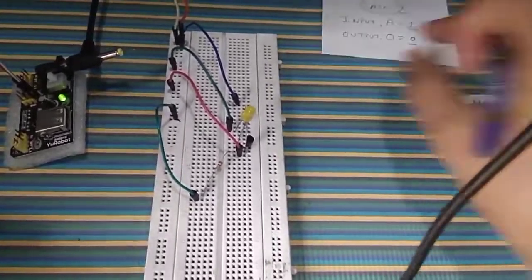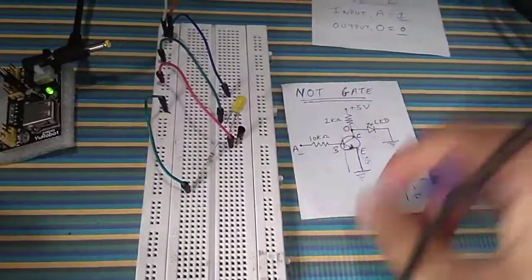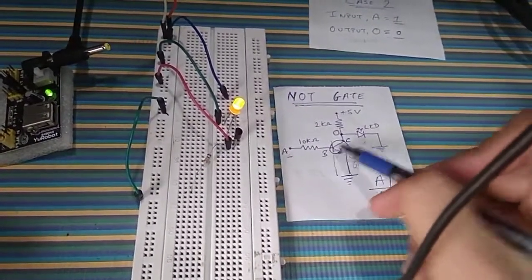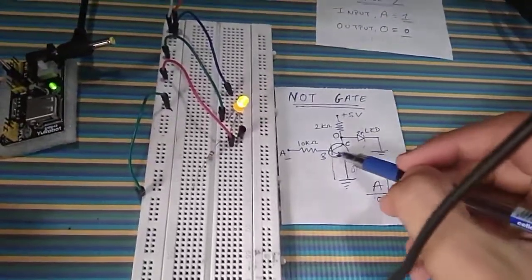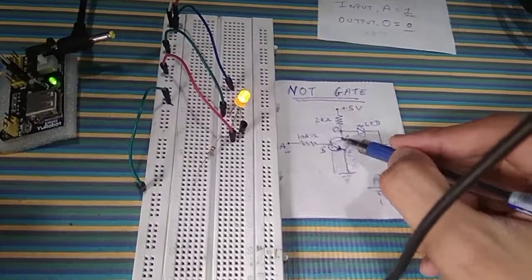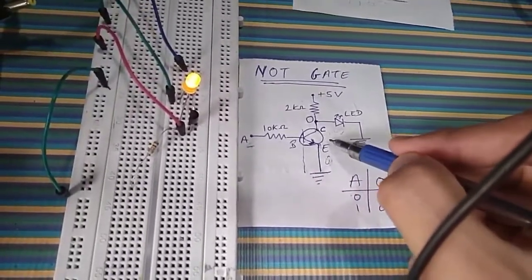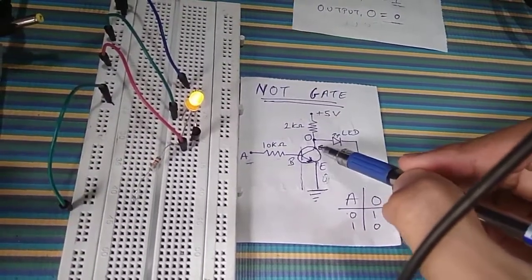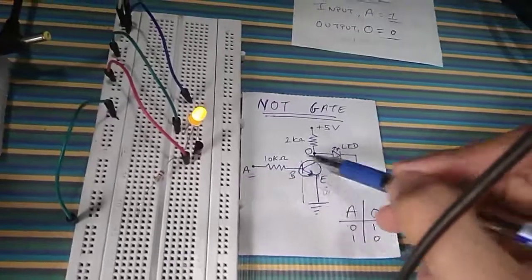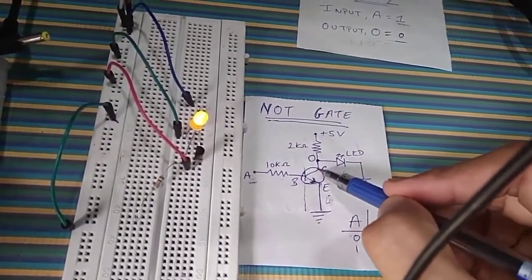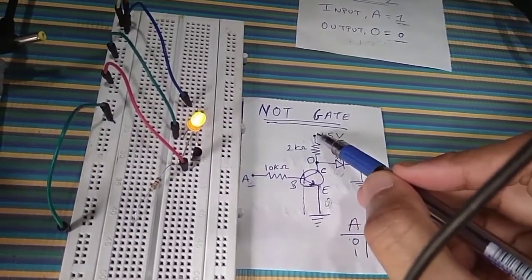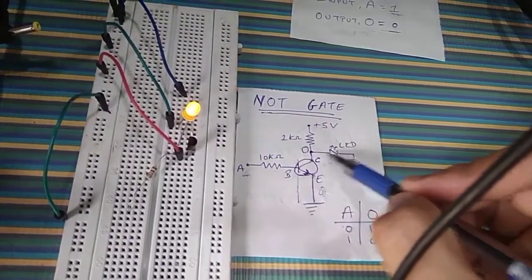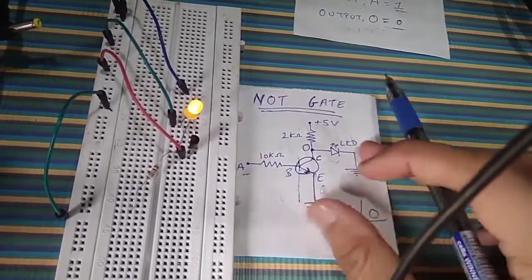Let me explain how this works using the circuit. When input A is zero, the base terminal is receiving zero input, which means the transistor acting as a switch has no connection between the collector and the emitter. So whenever the 5-volt supply passes through the 2 kilo-ohm resistor to the collector, it just stays there because there is no further connection in the circuit. The collector terminal is connected to the output terminal which goes to the LED, so the plus 5 volts goes directly to the LED and hence the LED glows — that is the high output.